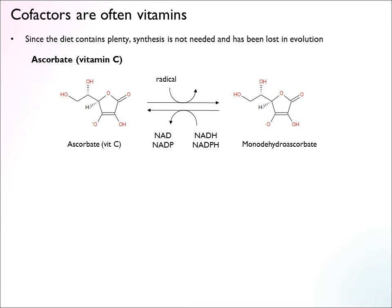One example is ascorbate — vitamin C. In many animals there is a synthesis pathway for ascorbate, but in primates there is not, making this a fairly recent loss in evolution. There is an enzyme system that processes ascorbate: it captures free radicals to generate monodehydroascorbate, and then there is a reverse process where this is regenerated back. This enzyme system is present — that's the functional role of ascorbate — but the net de novo synthesis pathway is no longer present.